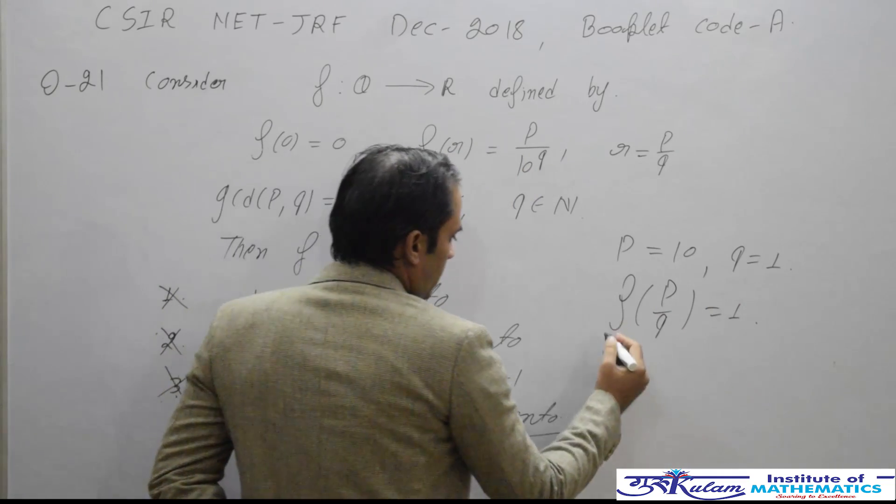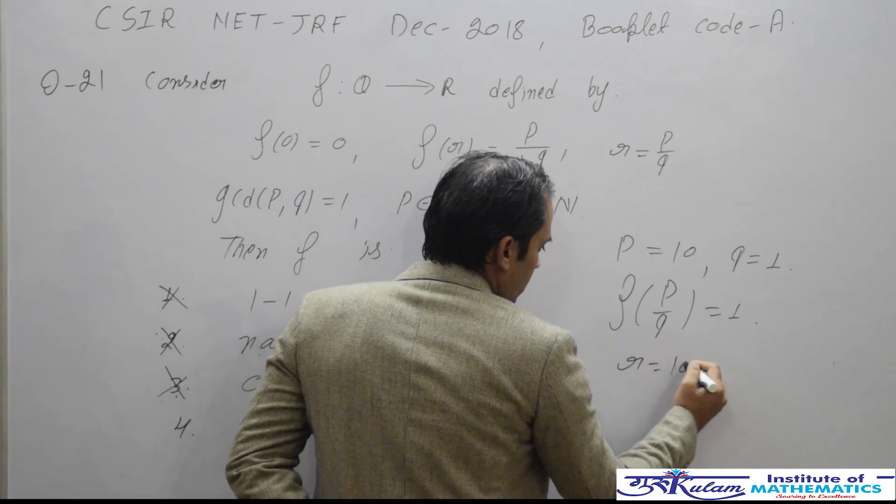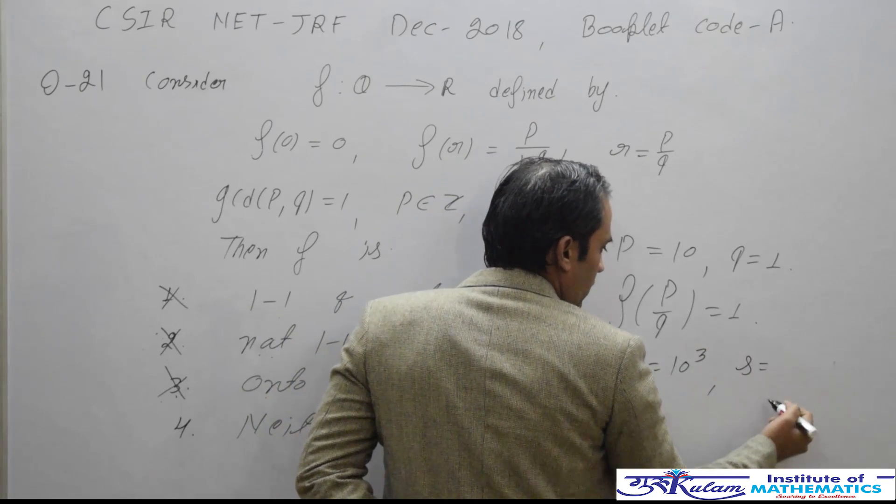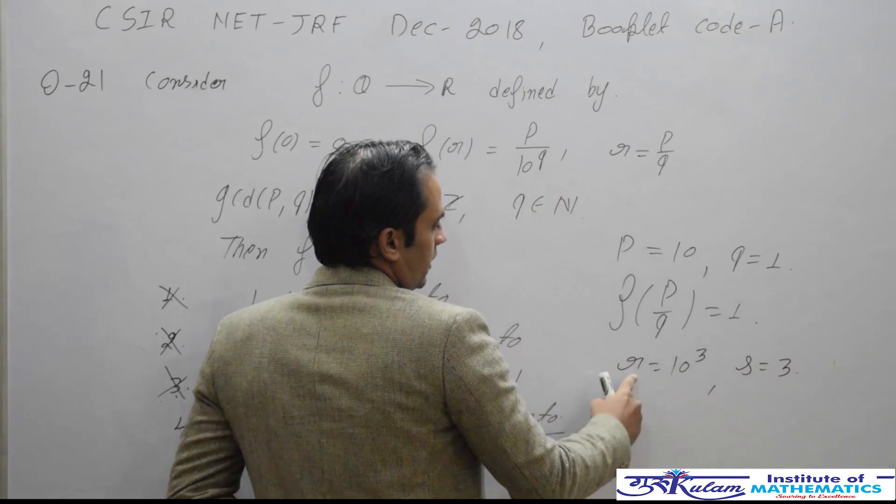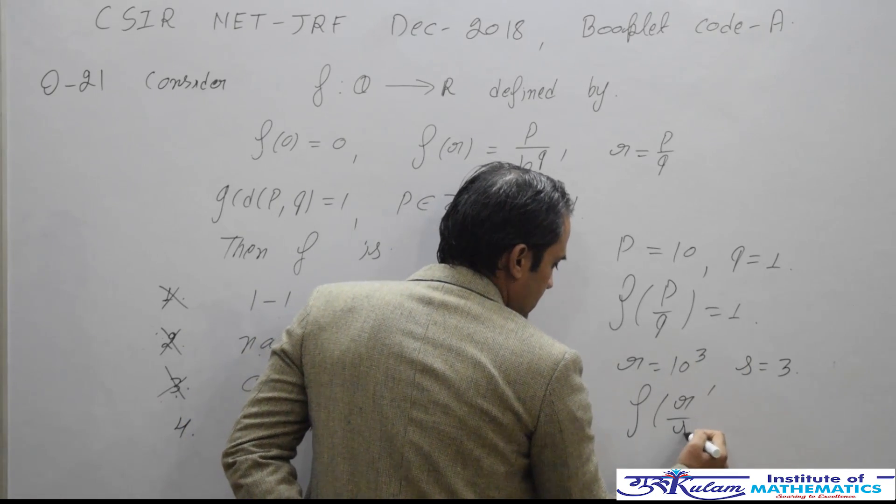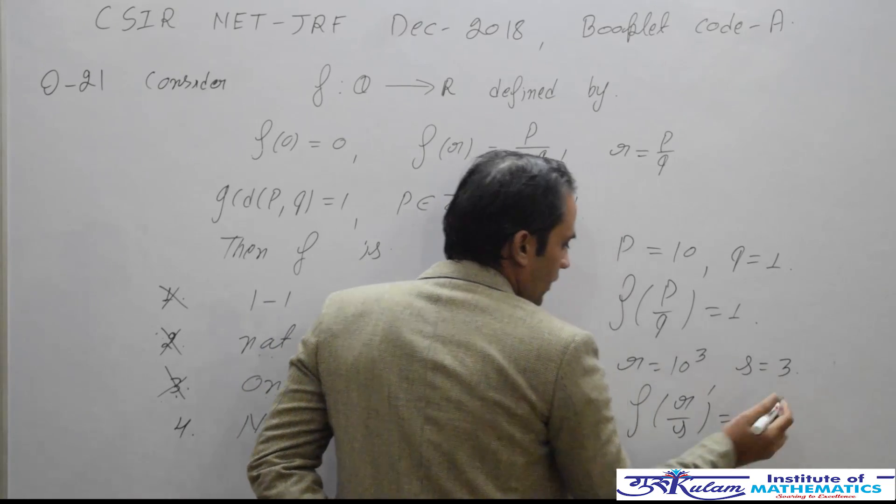Again, take r equal to 10^3 and s equal to 3. Then f(r/s) is also equal to 3.